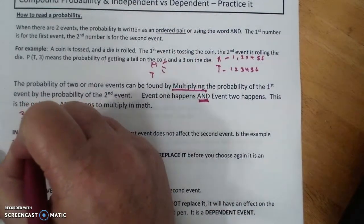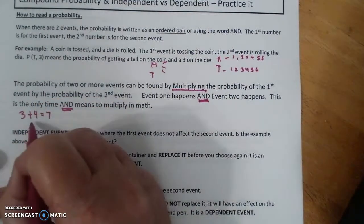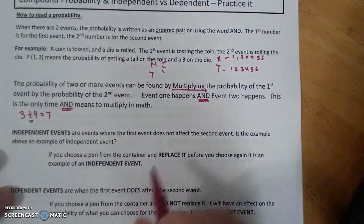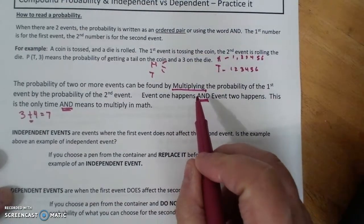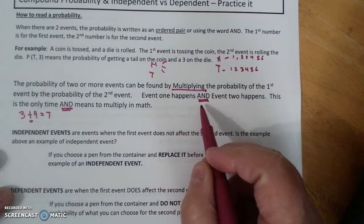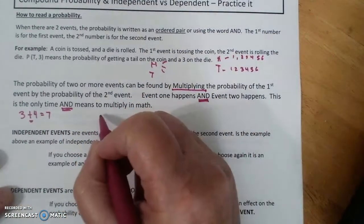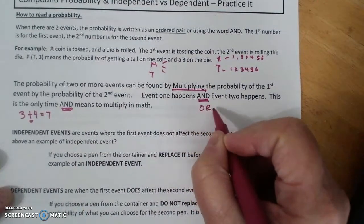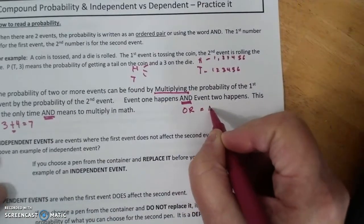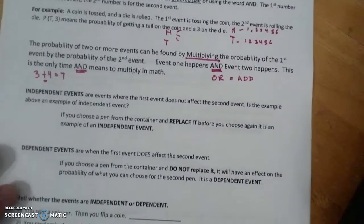If I say three and four is seven, that's an add. But if I'm doing probability, an and means multiply. So if I wanted to add, it would be or equals add in probability. Huge difference.